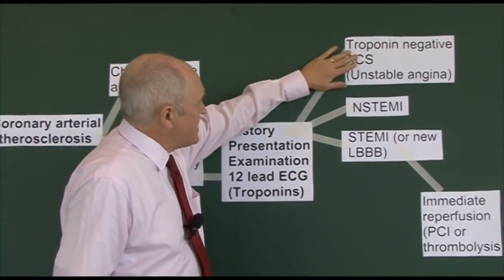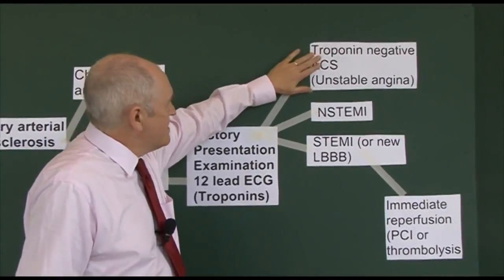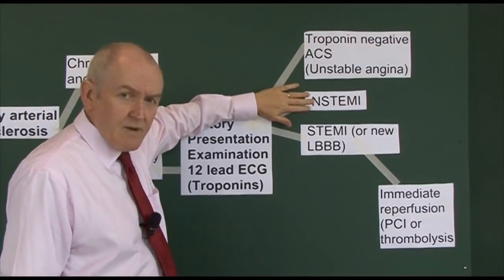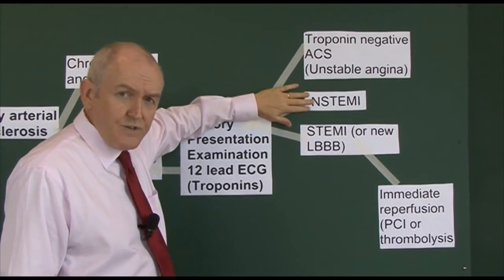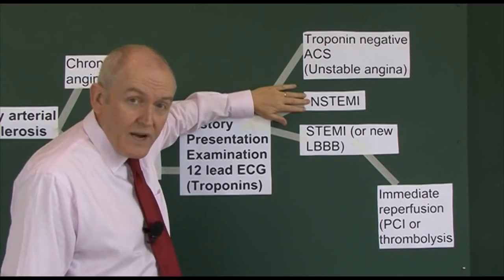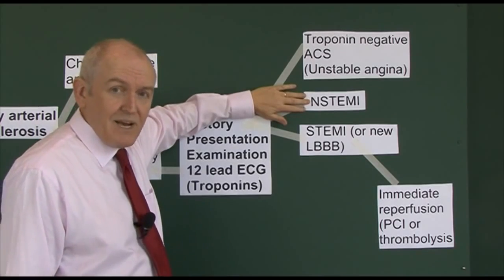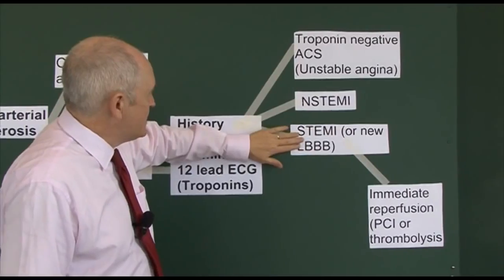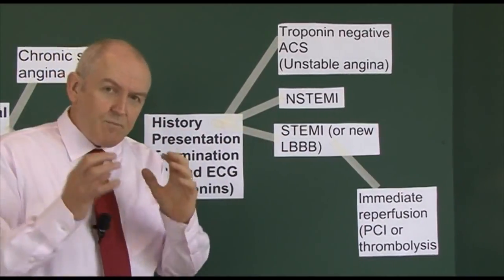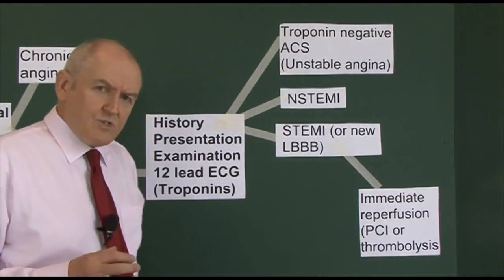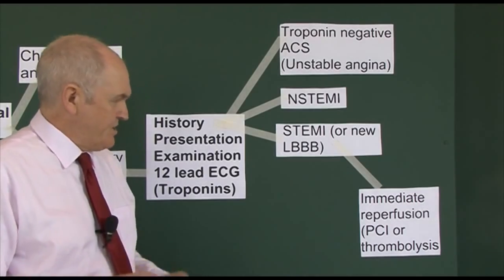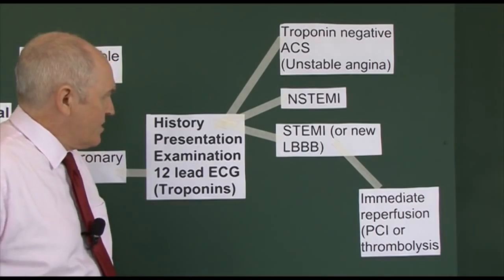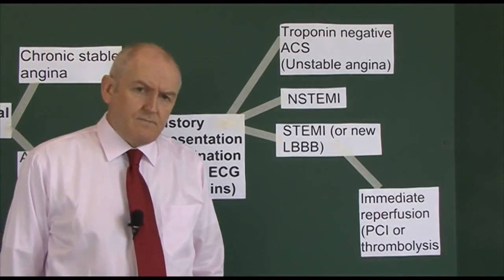Troponin-negative acute coronary syndrome and non-STEMI are caused by partial occlusion, very often by white thrombus caused by platelet aggregation. STEMI, where you get the complete blockage, is caused by red thrombus formation, which will completely occlude a length of the coronary arterial system.